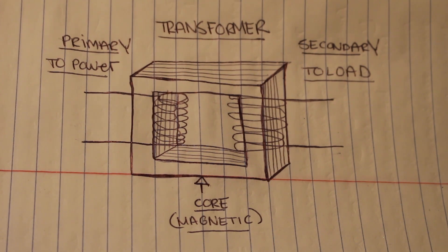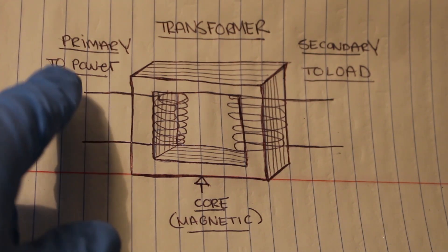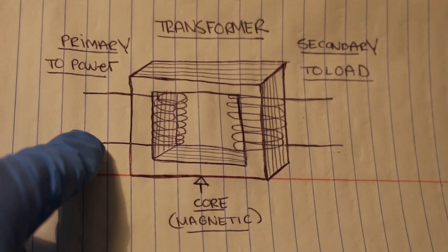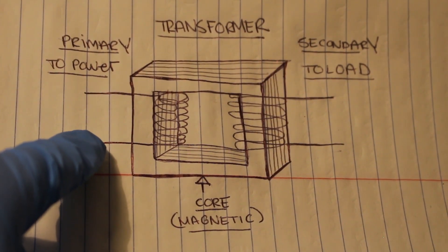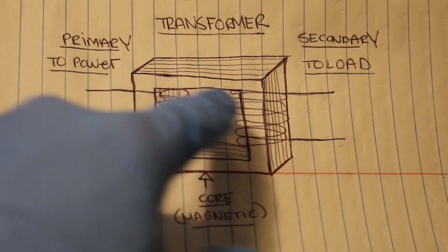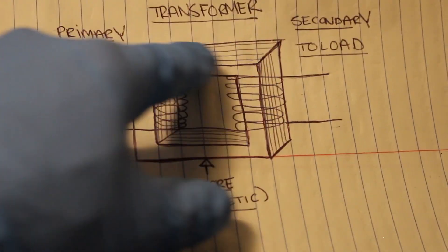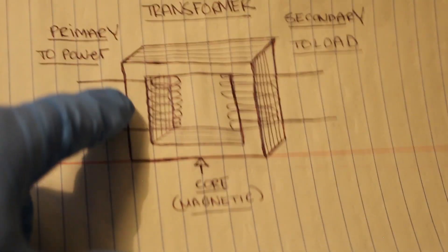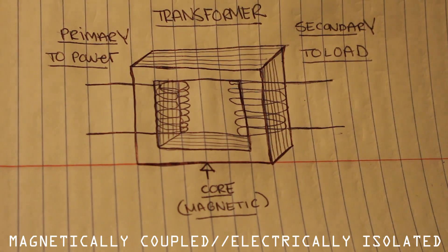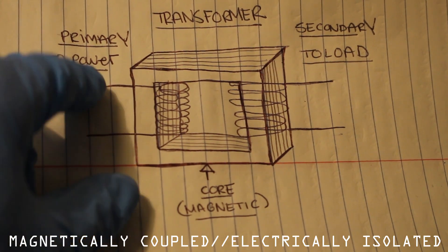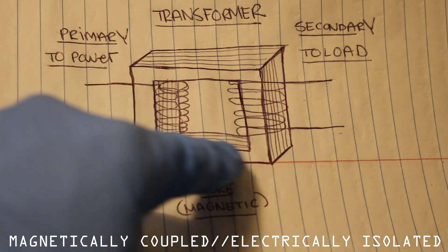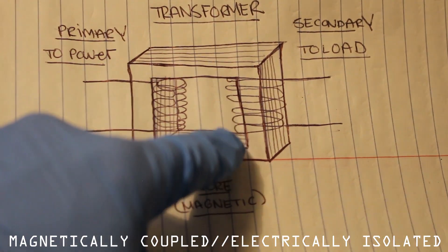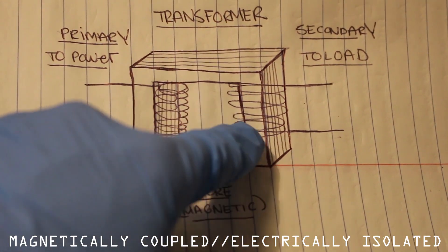A transformer operates by magnetic induction. When current flows through the primary winding, a magnetic field is created within the winding. Both windings are wound around the same core, and when the primary is energized it magnetically energizes the core which induces a voltage into the secondary.